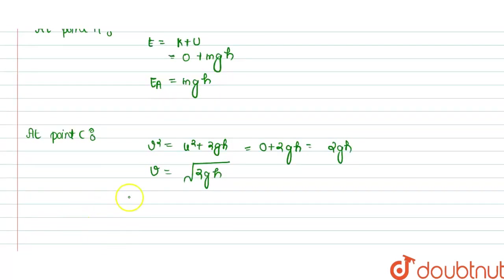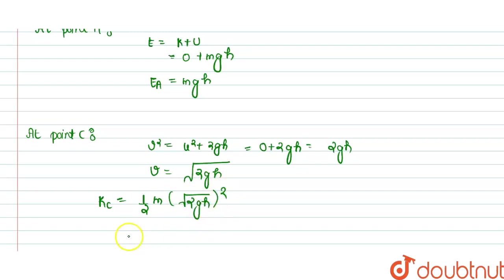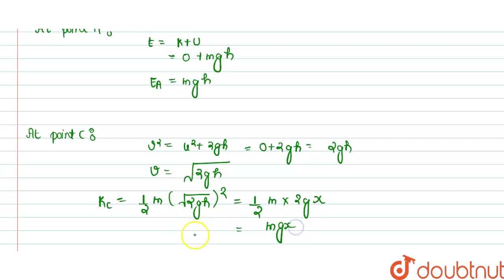Then kinetic energy at point C, K_C, equals half m times v², where v equals √(2gx), so K_C equals (1/2)m times 2gx, which equals mgx.